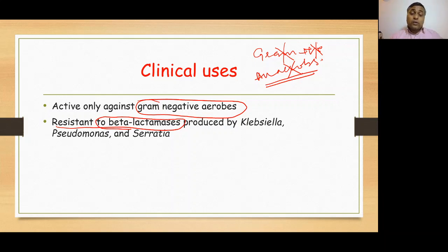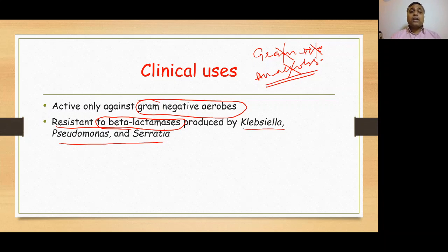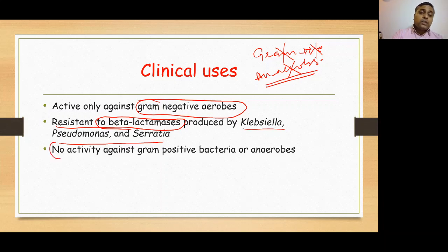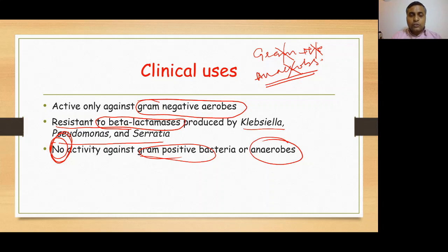Aztreonam is resistant to beta-lactamases. Just as carbapenems have low susceptibility to beta-lactamases, aztreonam has resistance against beta-lactamases produced by Klebsiella, Pseudomonas, and Serratia. This means aztreonam can be effective against Klebsiella, Pseudomonas, and Serratia even when those organisms produce beta-lactamase enzyme. However, it has no activity against gram-positive organisms or anaerobes, so you must remember that aztreonam is effective only against gram-negative aerobes and is not effective against gram-positive organisms or anaerobes.